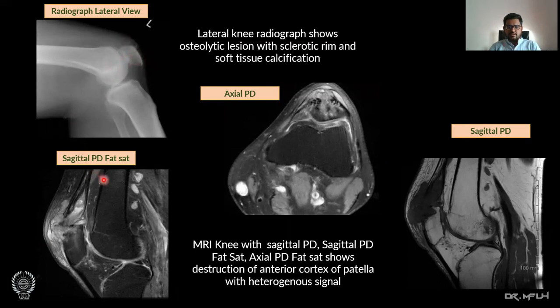On axial proton density fat-sat, axial proton density, and sagittal proton density knee images, there is destruction of the anterior cortex of the patella with heterogeneous signal intensity.